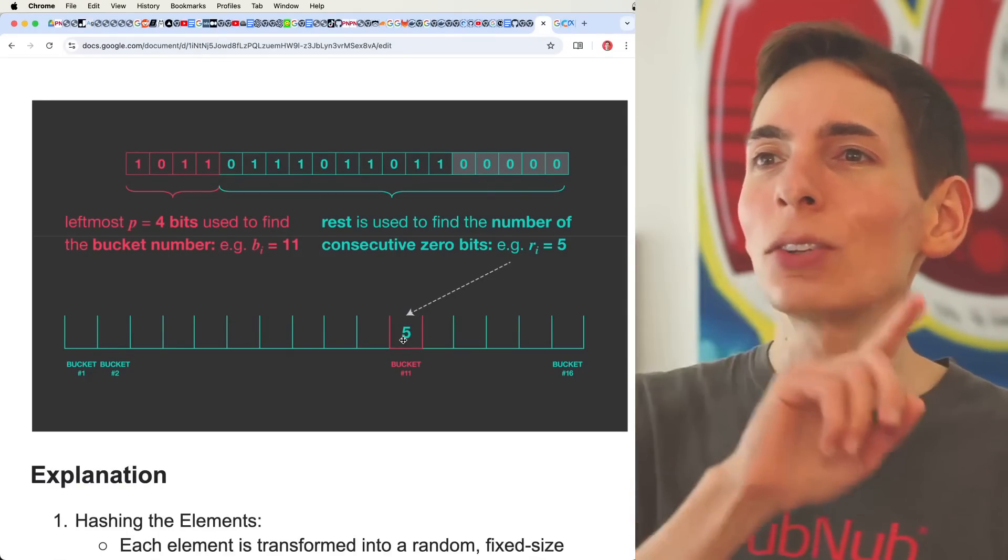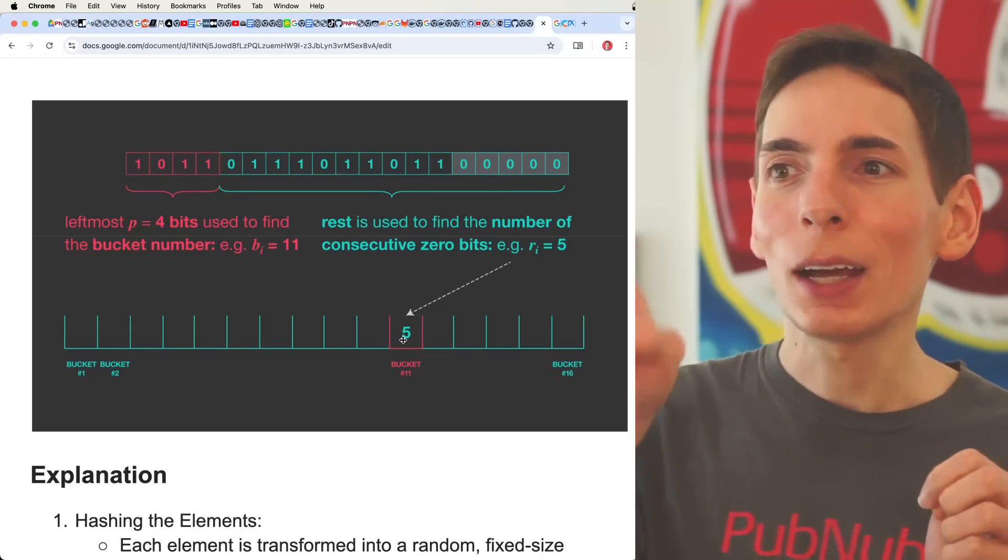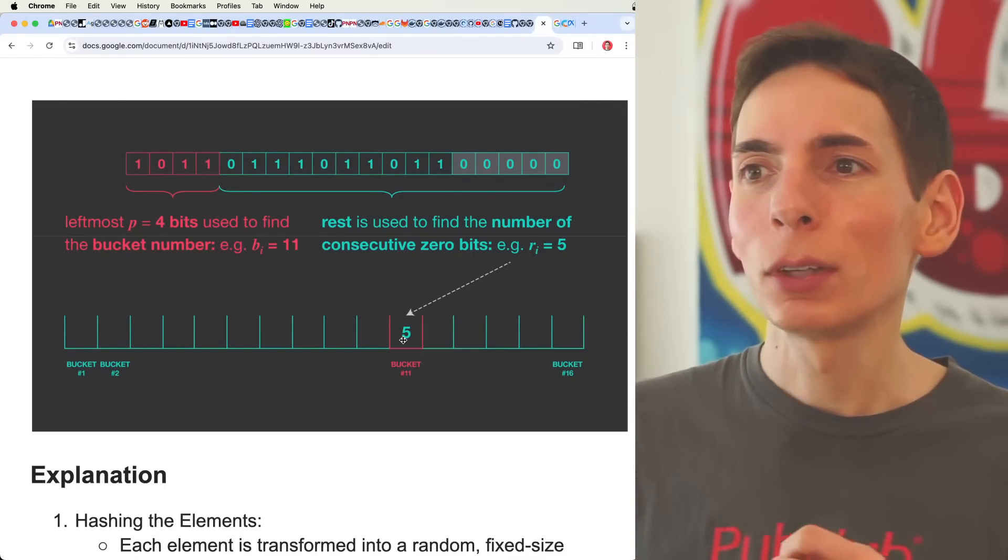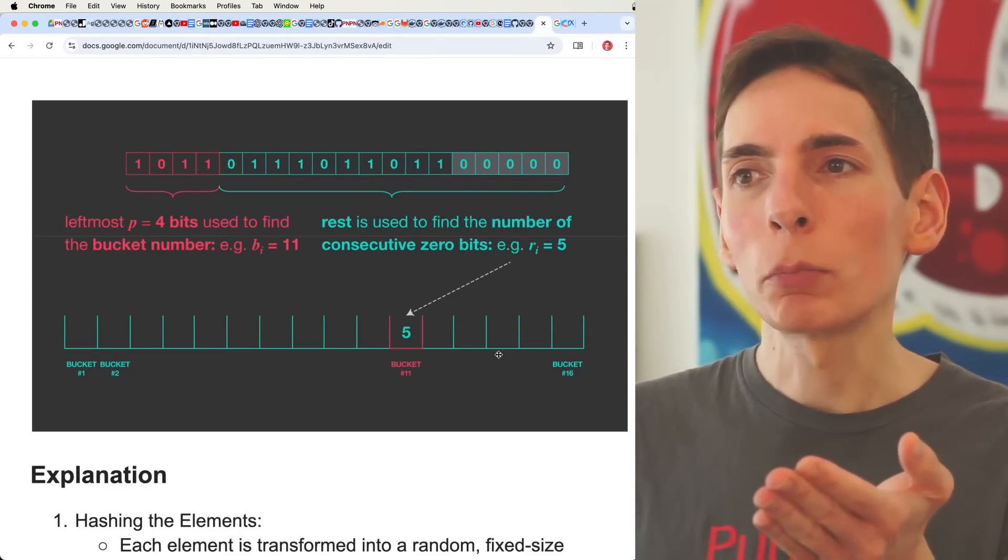So you'll notice that we added just one element here, the word apple. And we have bucket five. The bucket number 11 is actually the value five. All these other buckets are going to be one.